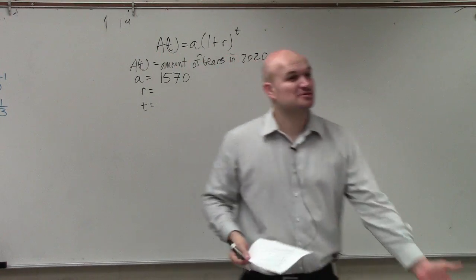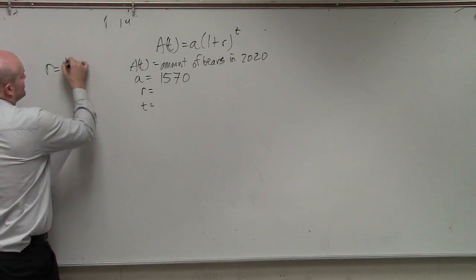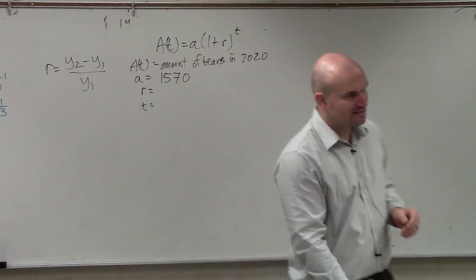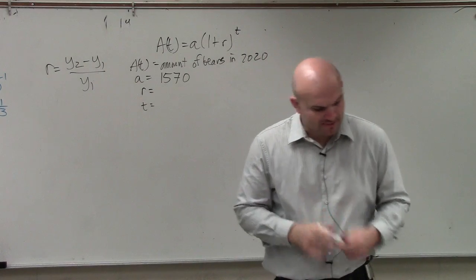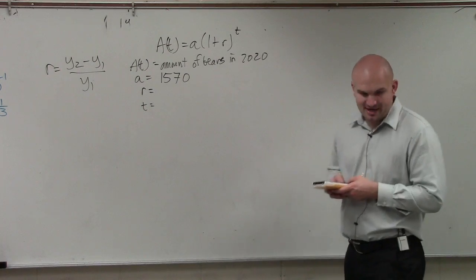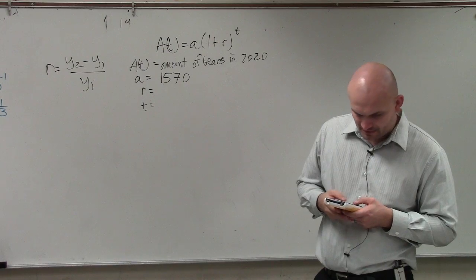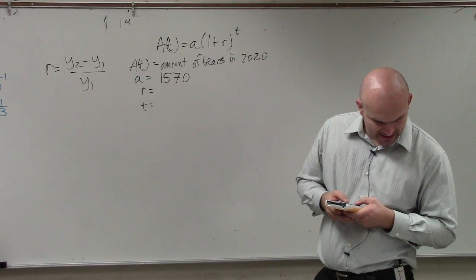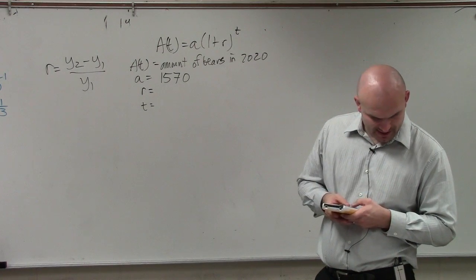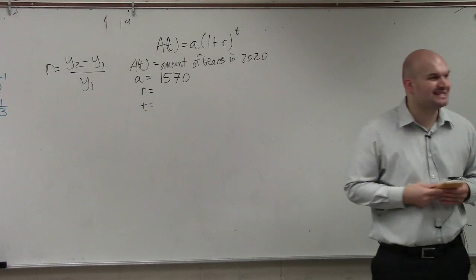To find the rate, we could say that R is going to be Y2 minus Y1 over Y1. I gave you guys that formula to figure out the rate. So I can do Y2, which is 1,884, minus Y1, which is 1,570, and then divide that by 1,570. And what that gives us is a 20% increase.